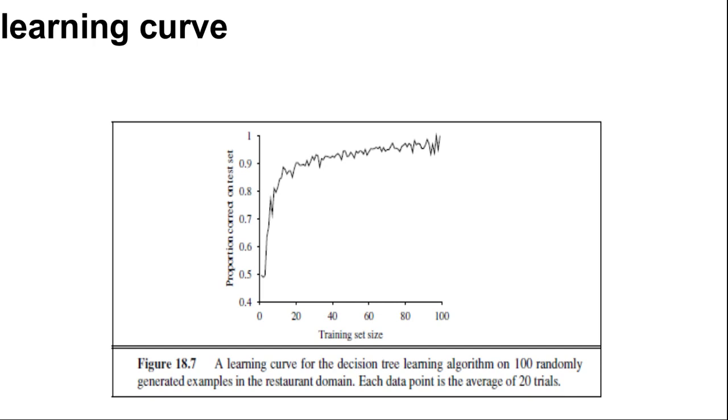For each size, we actually repeat the process of randomly splitting 20 times and average the results of 20 trials. The curve shows that as the training set size grows, the accuracy increases. For this reason, learning curves are also called happy graphs. In this graph, we reach 95% accuracy. It looks like the curve might continue to increase with more data.